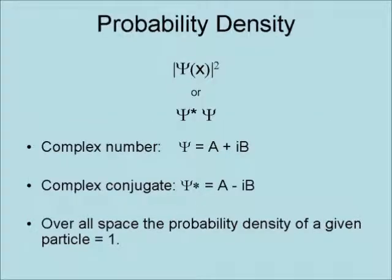The probability density, which is the probability of finding a particle at a given point in space, is denoted by the absolute value of Psi squared, or Psi star times Psi, where the complex number is denoted as Psi equals A plus iB,